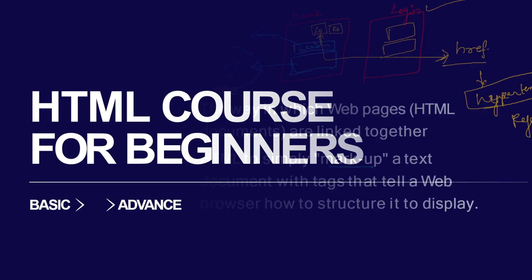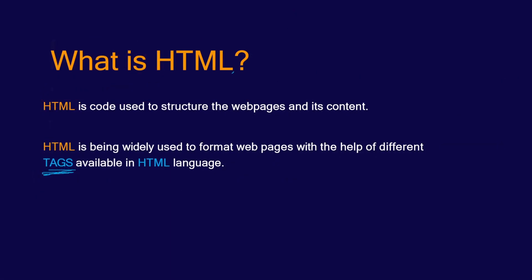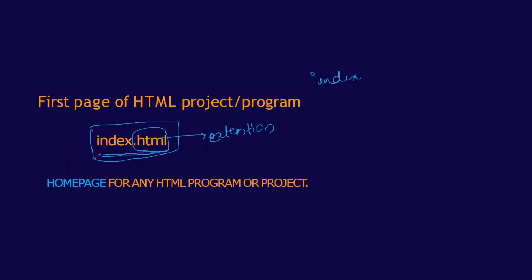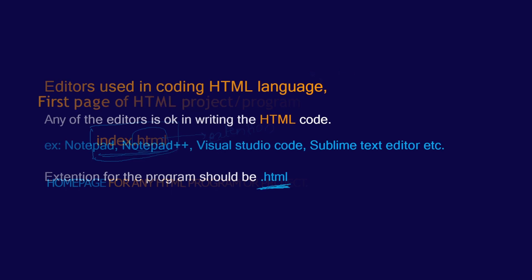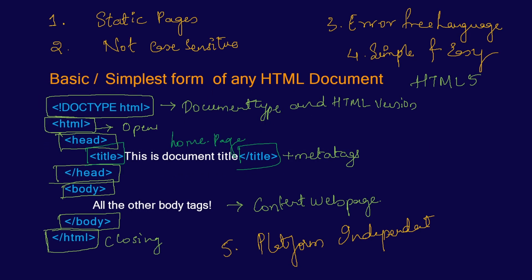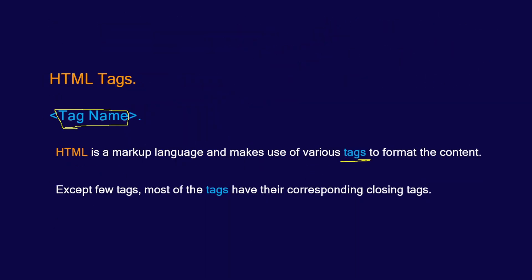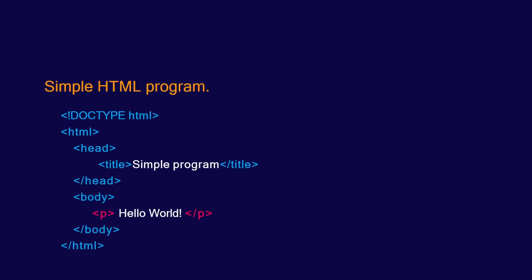In our previous videos, we have seen what HTML stands for, what is HTML, which is the first page of any HTML program or project, what are the editors that we are going to use for HTML, the basic tags or basic snippet or basic document of HTML, what are the contents of a tag, what is a tag, and a basic program.